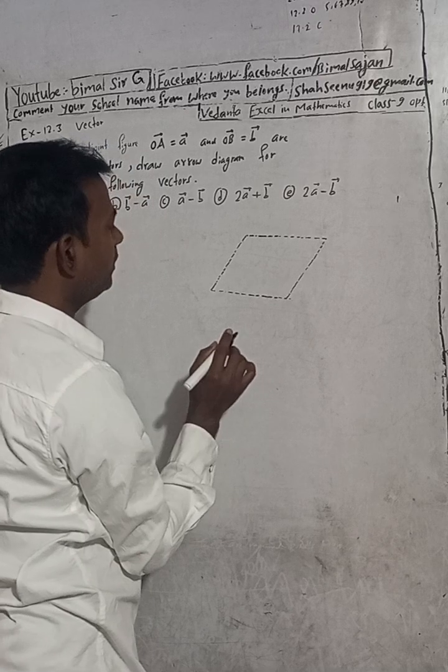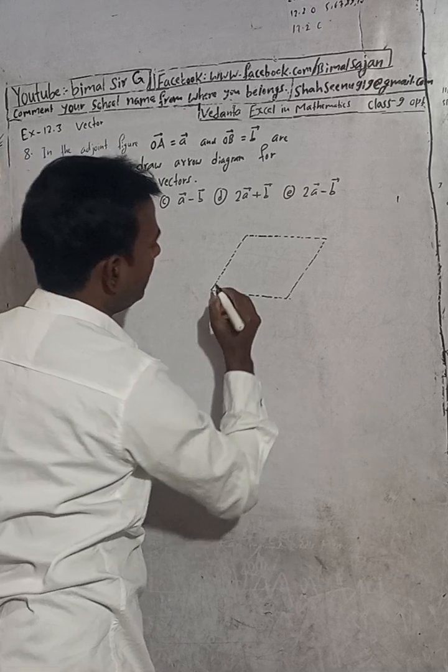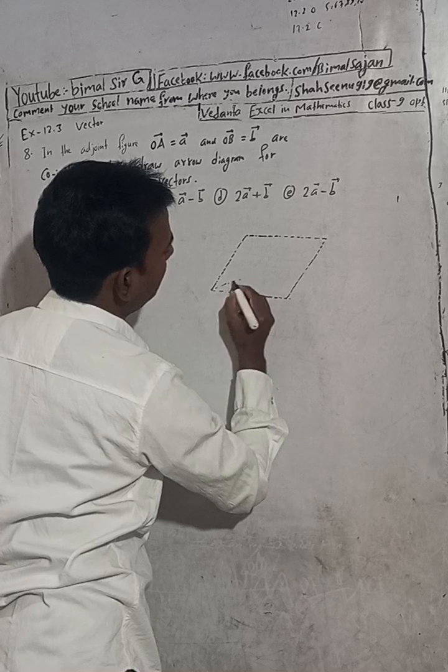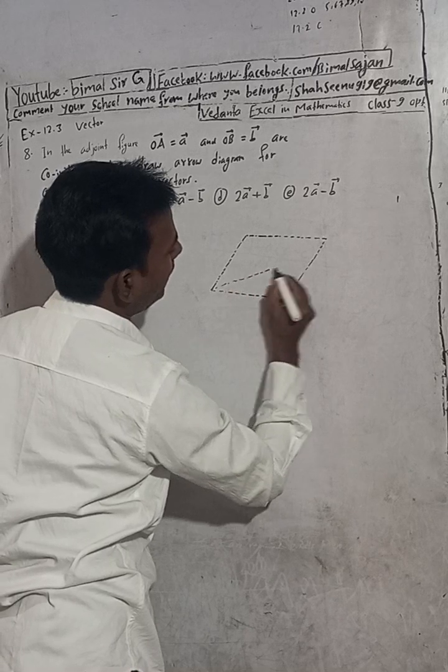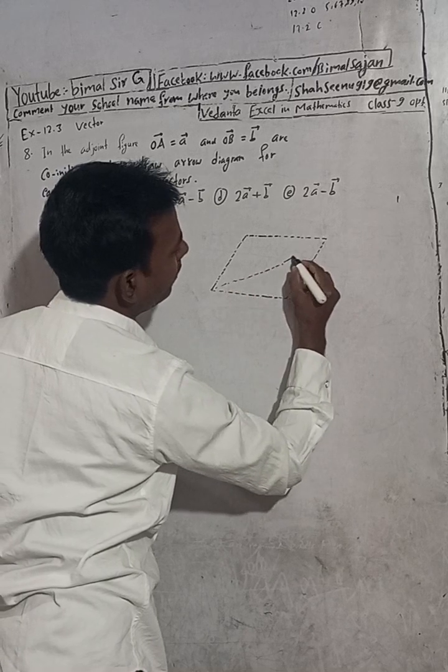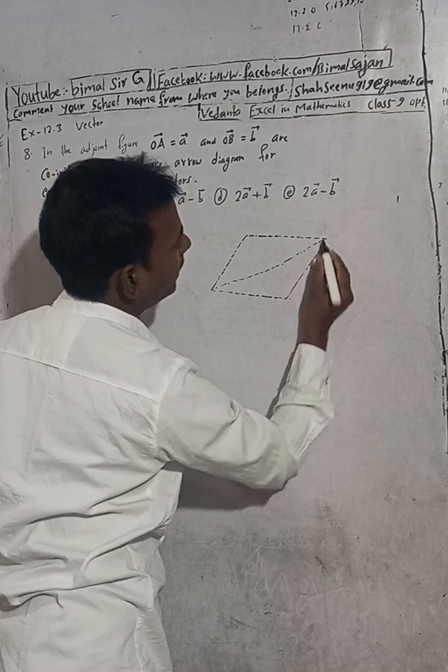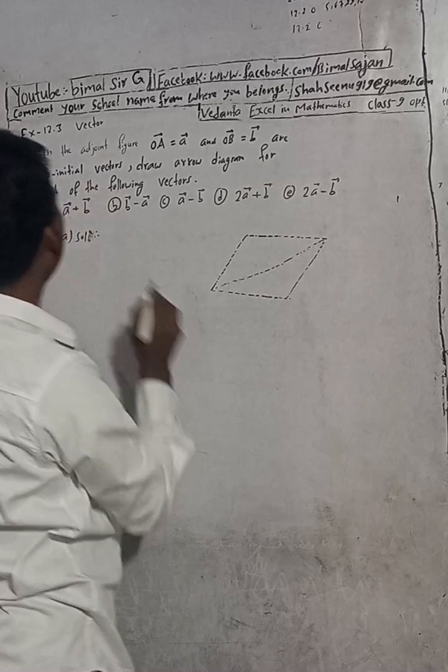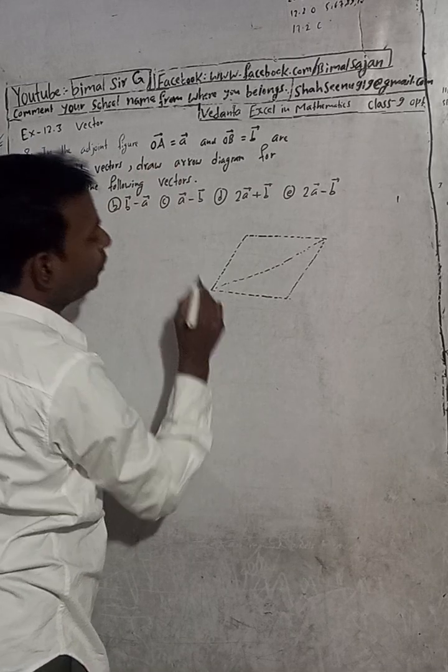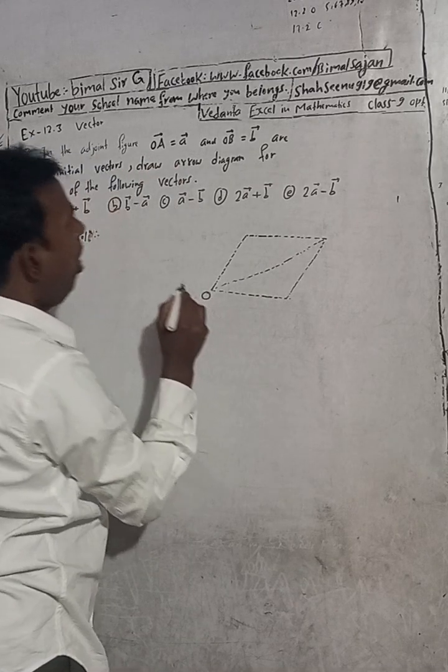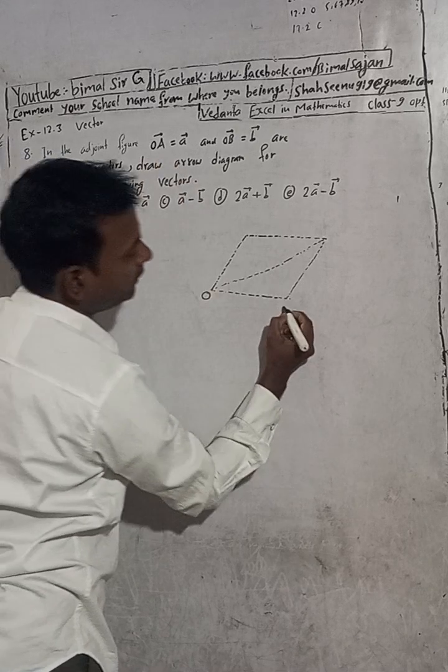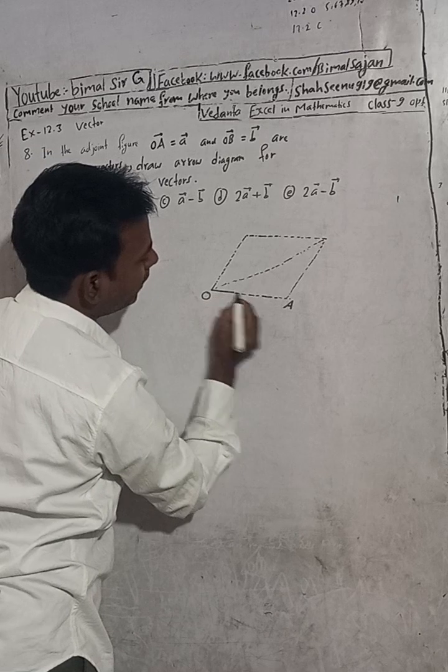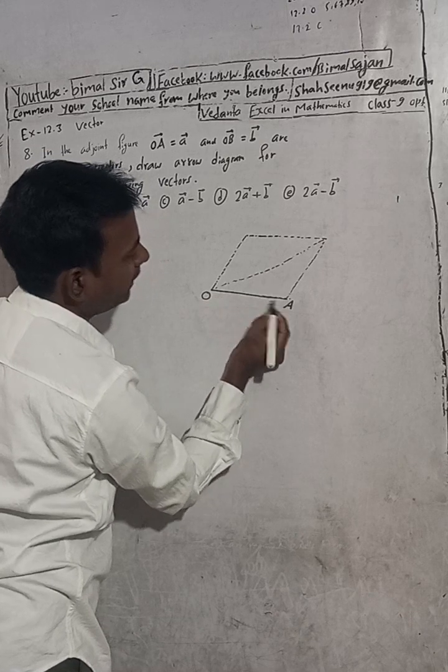This is a parallelogram. Our concept starts from this parallelogram. Now what I'm going to do is indicate OA vector. This is the center O. A vector means this is A vector, so this is our OA vector. First I have to highlight this - this is OA vector.